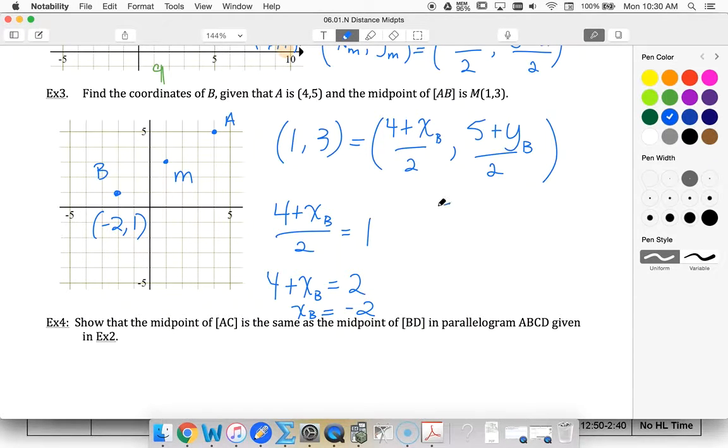Second equation: (5 plus y_B) divided by 2 must equal 3. Multiply 2 to the other side. 5 plus y_B must be 6. Well, of course, 5 plus 1 is 6. So my y coordinate must be 1.